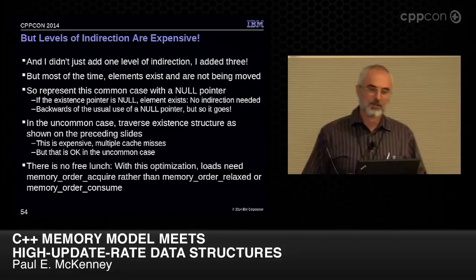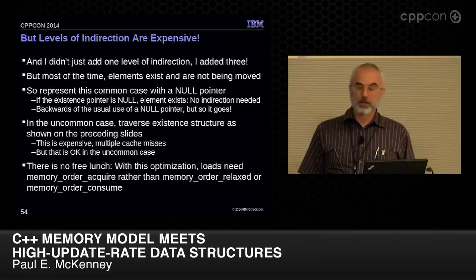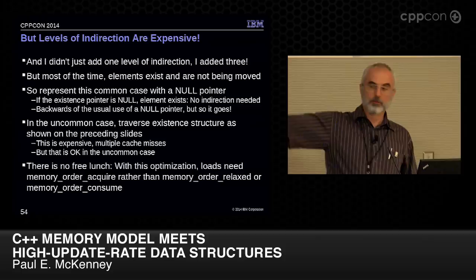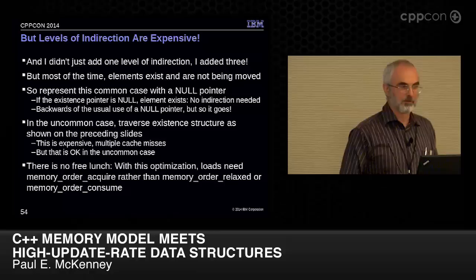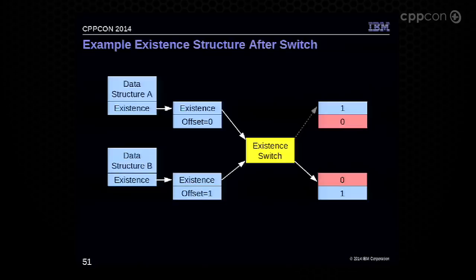If the existence structure were always present and you always took that overhead, you could use a relaxed load when accessing the existence switch. This optimization — null meaning exists — is probably better than using a relaxed load, but your mileage may vary. An audience member confirms: these existence-structure pointers are on each individual node in the tree, which is correct.